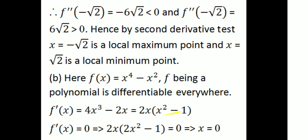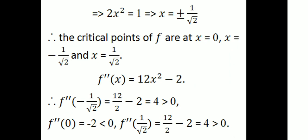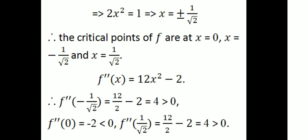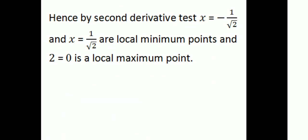For f(x) = x⁴ − x², the first derivative is 4x³ − 2x = 0, giving x = 0 and x = ±1/√2 as critical points. Applying the second derivative test: at x = ±1/√2, f''> 0, so these are local minimum points. At x = 0, f'' = −2 < 0, so x = 0 is a local maximum point.